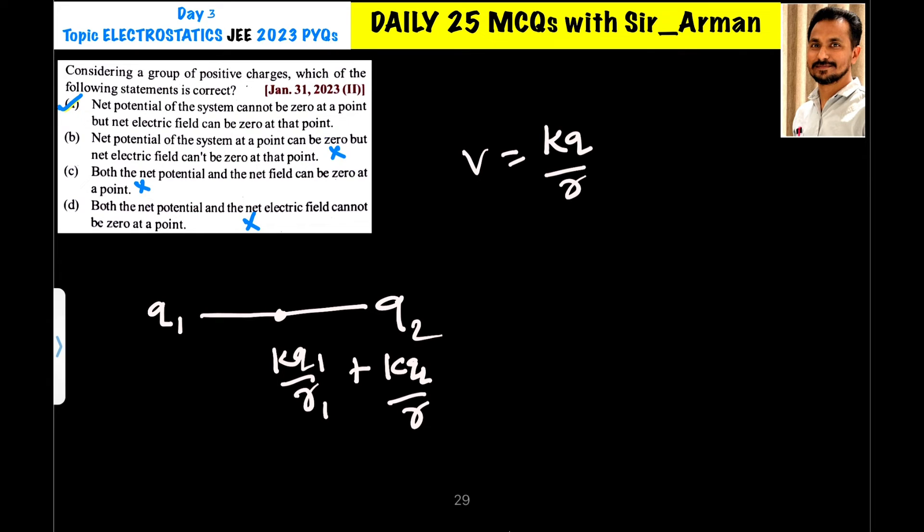But if I talk about electric field, in that case, let us assume this is plus 2 and this is also plus 2. Then exactly midway between these two points, the electric field due to positive charge, this positive charge is towards right and the electric field is due to this positive charge is towards left. Hence, they cancel each other.